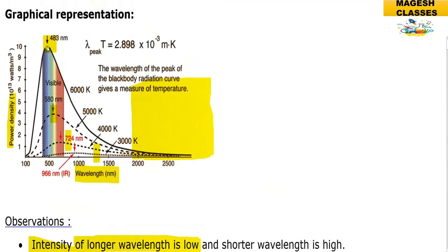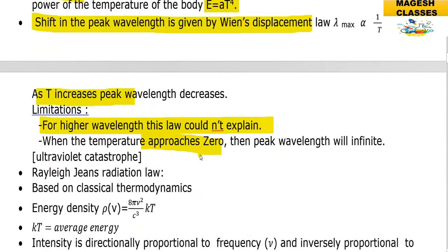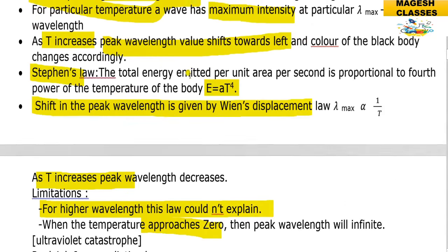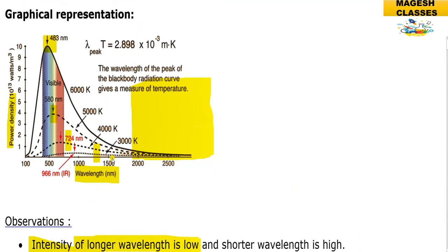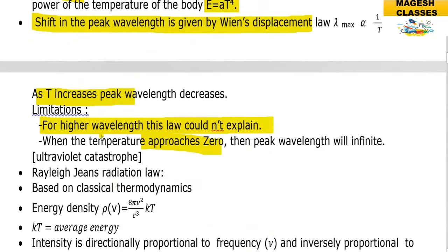Peak wavelength is inversely proportional to temperature. When the temperature is very low — approaching zero — the peak wavelength tends to infinity. This situation is called the ultraviolet catastrophe, which cannot be explained by classical mechanics. The ultraviolet catastrophe arises because classical mechanics predicts the wavelength would become infinite as temperature approaches zero.